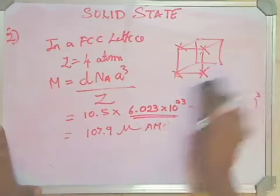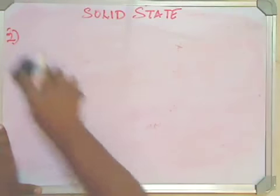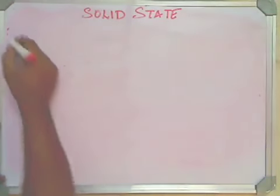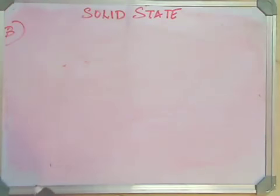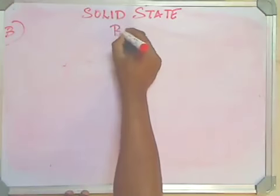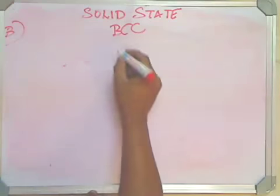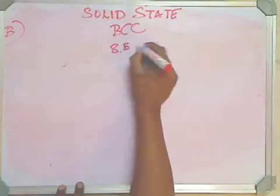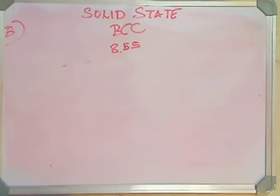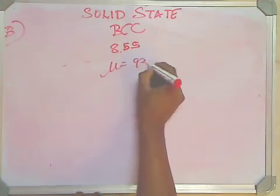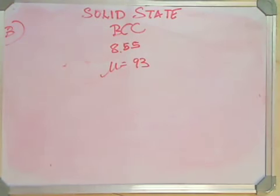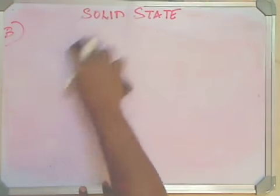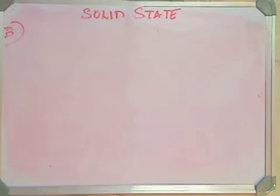The last problem which I will discuss here, a fairly lengthy one. Niobium crystallizes in a BCC lattice. If the density is 8.55 grams per centimeter cube, calculate the atomic radius of Niobium using its atomic mass of 93. Mu here has been given as 93. Now in some textbooks you might come across the atomic mass of Niobium as 92.9, but I would suggest you take it as 93 because it makes your calculations easier. The question requires you to find the atomic radius of Niobium.